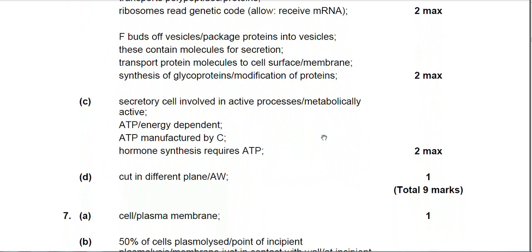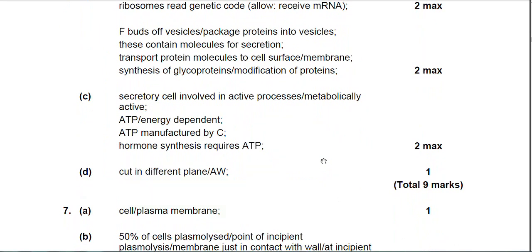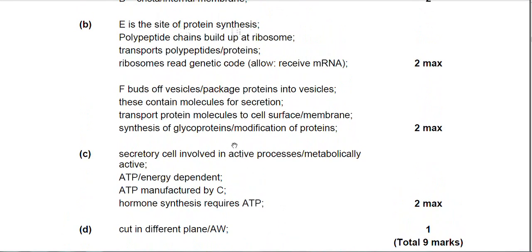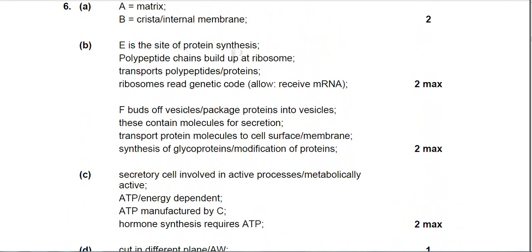Down to C then, about why you need lots of mitochondria in the cell. Well, it's because you're actually producing hormones that require ATP. Secretory cells involve active processes. They're very metabolically active. They carry out lots of reactions. And all the processes there are energy-dependent, ATP-dependent. And lastly, I've said there that ATP is produced by C, which, of course, is the mitochondria. So there you go. That's another example of a cell structure question. And I hope that helped.